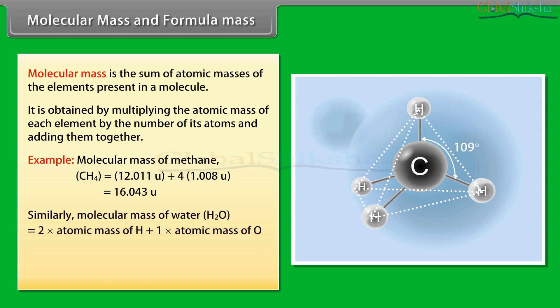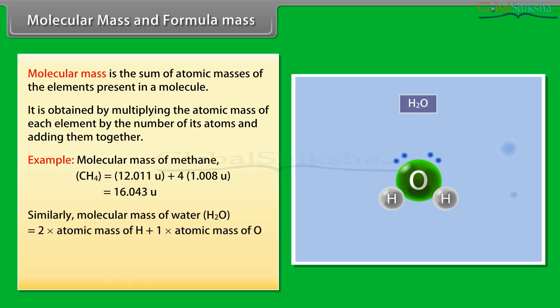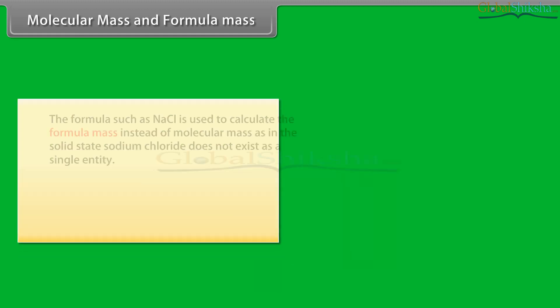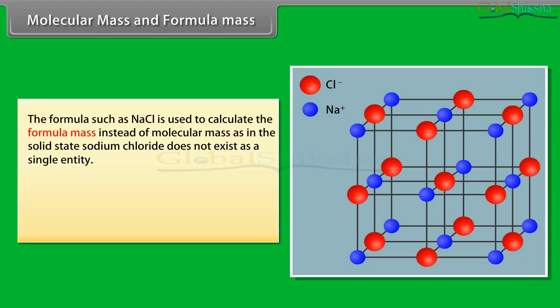Similarly, the molecular mass of water H₂O equals 2 × (atomic mass of H) plus 1 × (atomic mass of O), which is 2 × 1.008u plus 16.00u, equal to 18.02u. A formula such as NaCl is used to calculate the formula mass instead of molecular mass, as in the solid state sodium chloride does not exist as a single entity.